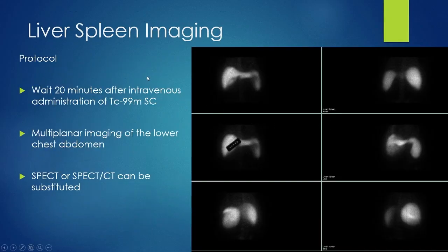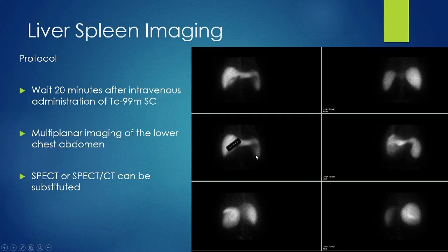A normal study shows liver activity greater than spleen. Faint bone marrow activity may be visible. Here's an interpretation challenge: the liver-to-spleen ratio appears normal — liver much hotter than spleen — but there's a lot of bone marrow activity, which doesn't fit reticuloendothelial shift. The explanation is that 10 millicuries were injected — above the recommended 4 to 6 millicuries — therefore artificially increased bone marrow activity. We must keep injected activity correct.